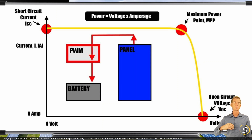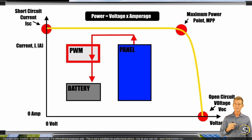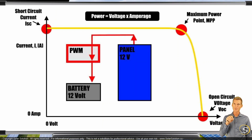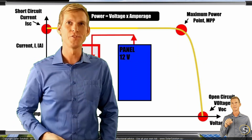So let's assume you have a battery which is quite extensively discharged and has a voltage of 12 volts. That means the panel is also operating at the 12 volt point on the IV curve.